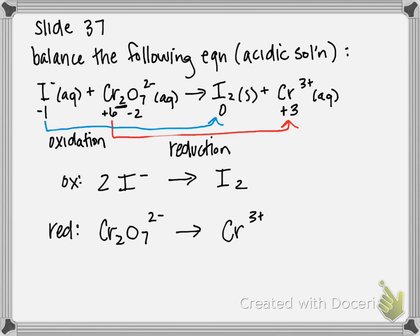So we need these numbers of elements to be balanced on either side. So I'm going to put a two in front of my iodine so that I have two iodines on both sides. For my reduction, I have two chromiums on the reactant side, but only one on the product side. So I'm going to have to put a two in front of my chromium three plus.